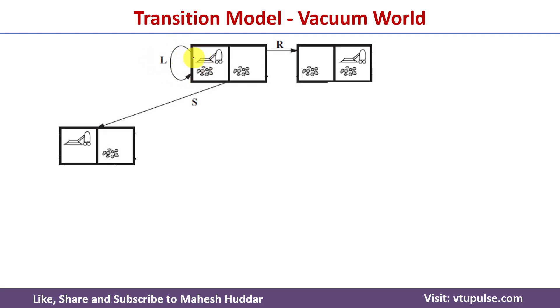When we apply the Right action, the AI agent will move from location A to location B, and this is how the new state will look like.